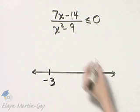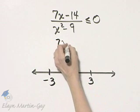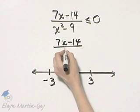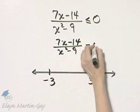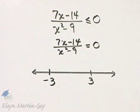Then remember, you also solve the related equation. That would be 7x minus 14 over x squared minus 9 is equal to zero.